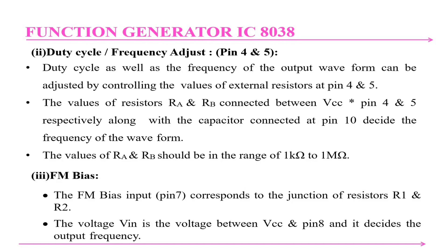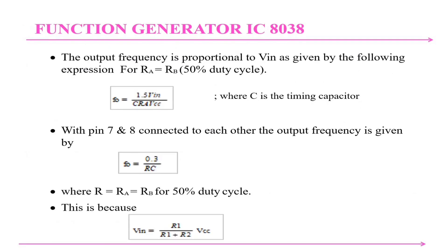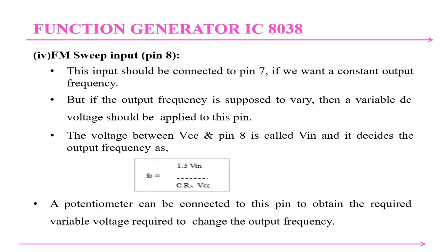The FM bias input at pin 7 corresponds to the junction of resistors R1 and R2. The voltage Vin is the voltage between VCC and pin 8, and it decides the output frequency. The output frequency is proportional to Vin: for Ra = Rb (50 percent duty cycle), F0 = 1.5 × Vin / (C × Ra × VCC), where C is the timing capacitor. When pins 7 and 8 are connected together, the output frequency is F0 = 0.3 / (R × C), where R = Ra = Rb for 50 percent duty cycle, because Vin = R × VCC / (R1 + R).